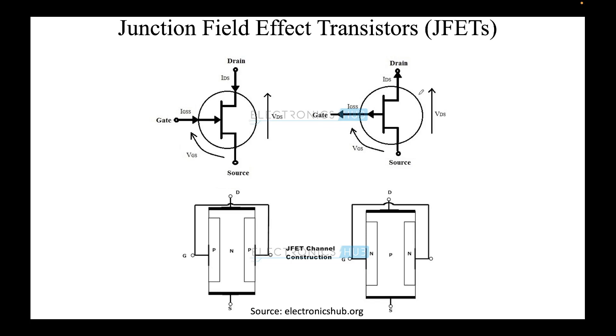Let's first try to understand what a junction field effect transistor is, also known as JFET. On the left hand side you can see the symbol for the N-type JFET. Why N-type? Because the conduction here is due to electrons, and on the right hand side you can see the P-type JFETs.